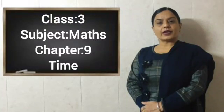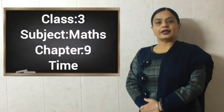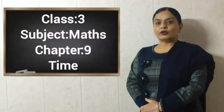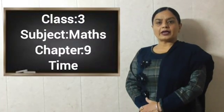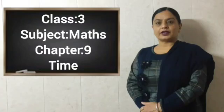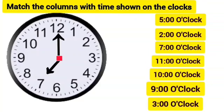Greetings to all students of class 3. Today in our chapter number 9, we will learn how to match the clocks with their different times. Dear children, we have learned that when the minute hand is on 12 and the shorter hour hand is on any number, then time is exactly that number. Keeping this in view, we will match the columns with the time shown on the clocks.